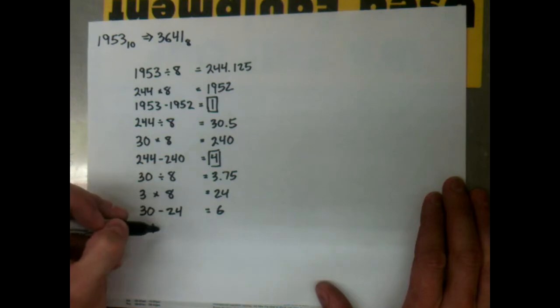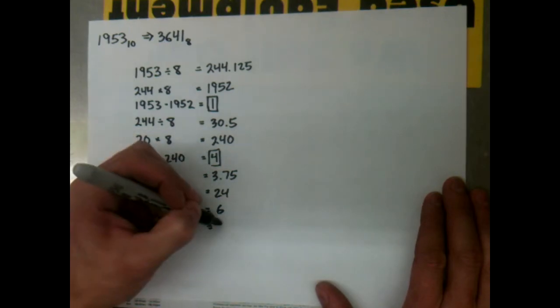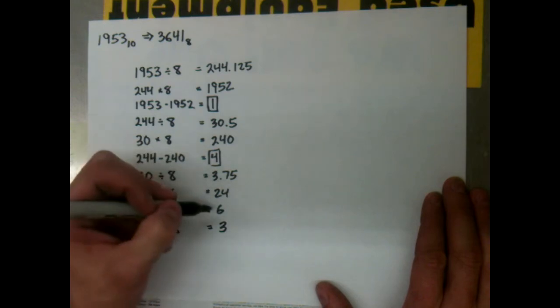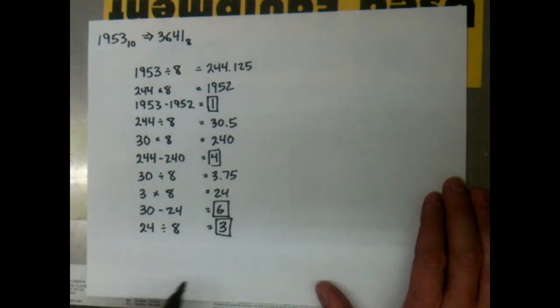Next we take our 24 and divide by 8, and that gives us 3. Now I forgot to box these, but they're important to us. If you notice, when you divide 24 by 8 we get a whole number, so that means we're done. You can't take a 3 and divide 8 into it, so we are done.